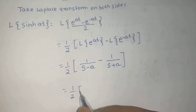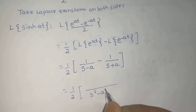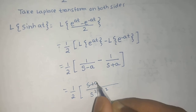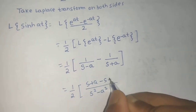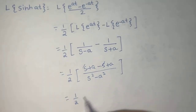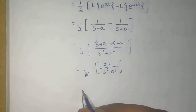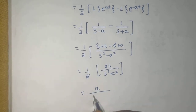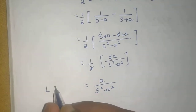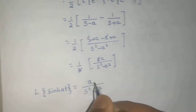So we get 1/2 times [1/(S−A) − 1/(S+A)]. Using the identity (A−B)(A+B) = A²−B², the numerator becomes S+A minus (S−A), which gives 2A, and the denominator is S squared minus A squared. The 2 cancels, and we finally get A divided by S squared minus A squared, which is what we were required to prove.